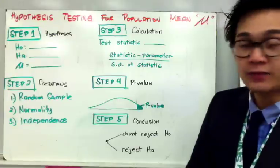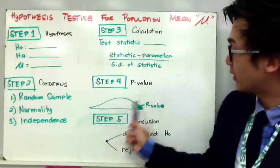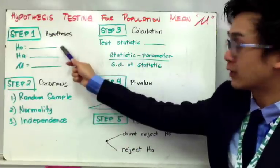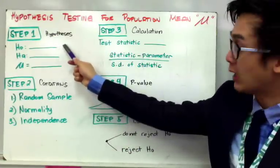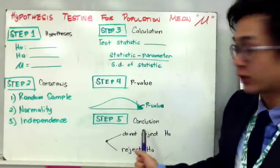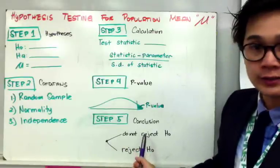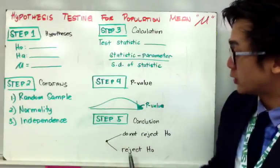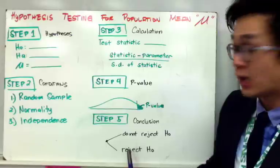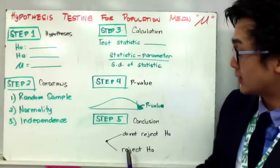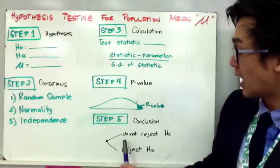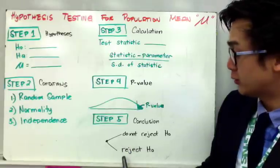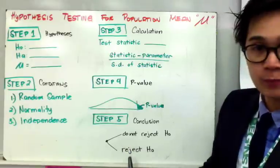For step number five, once you have found your p-value and decided whether to reject or not reject your null hypothesis, you will write your conclusion in the context of the problem. There are only two possible conclusions in hypothesis testing: either you do not reject your null hypothesis, or you reject your null hypothesis.